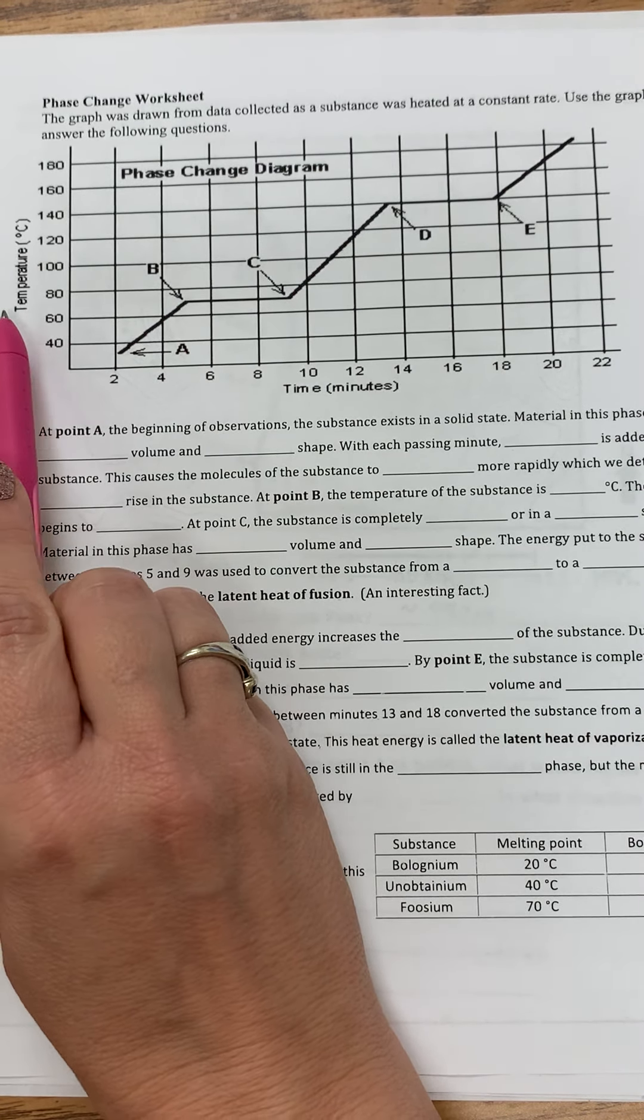So on this graph, sometimes in place of time, you will see heat or energy. So these numbers would represent the amount of heat that's increasing. And a lot of times you may not have numbers on this bottom part here. So on this graph, you see that we start with a substance here.